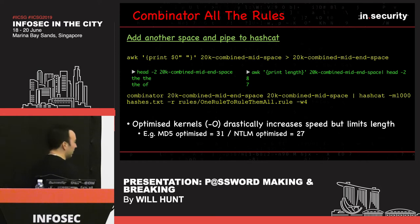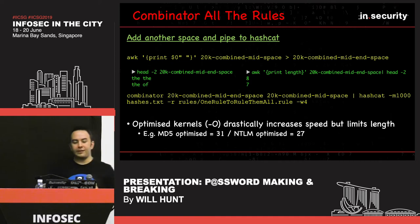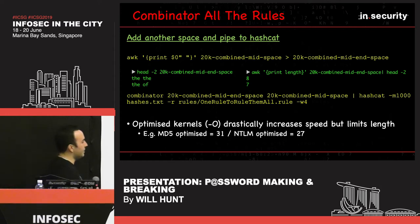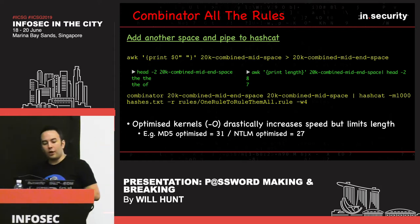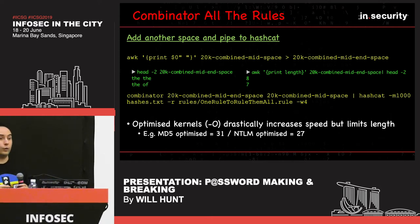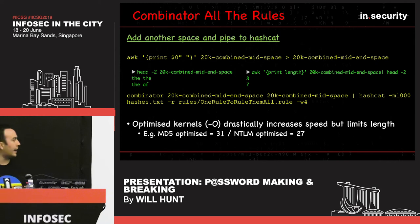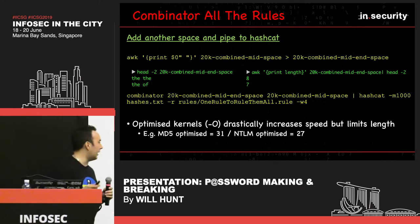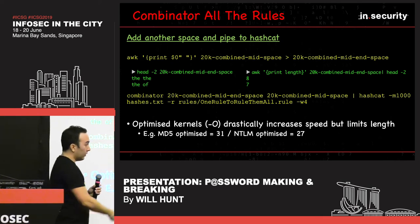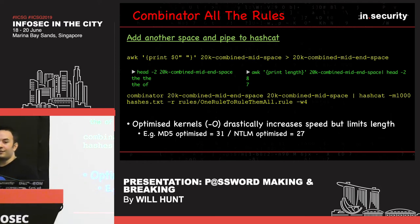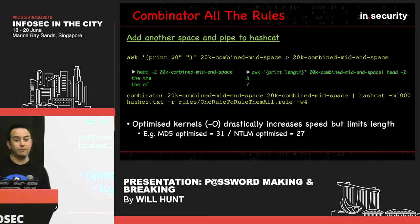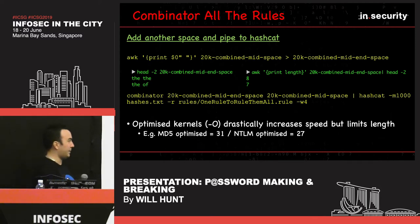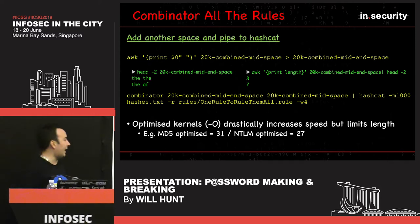Also worth noting: optimized kernels. A lot of great work has been done on HashCat, and using dash O will allow you to drastically increase cracking speed — but the limitation is it decreases the maximum password length supported. HashCat supports up to 256 characters for most things, but with optimized kernels Windows is limited to 27 characters and MD5 to 31. So if you're cracking a 28-character password you might have to sacrifice speed for the ability to crack longer passwords. Just something to be aware of.